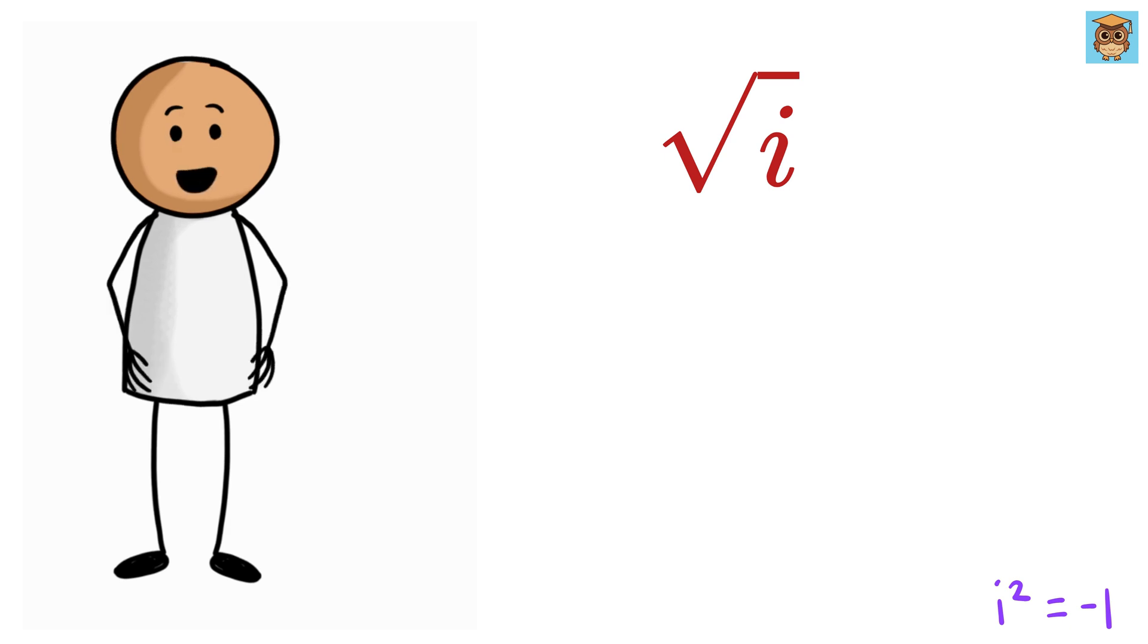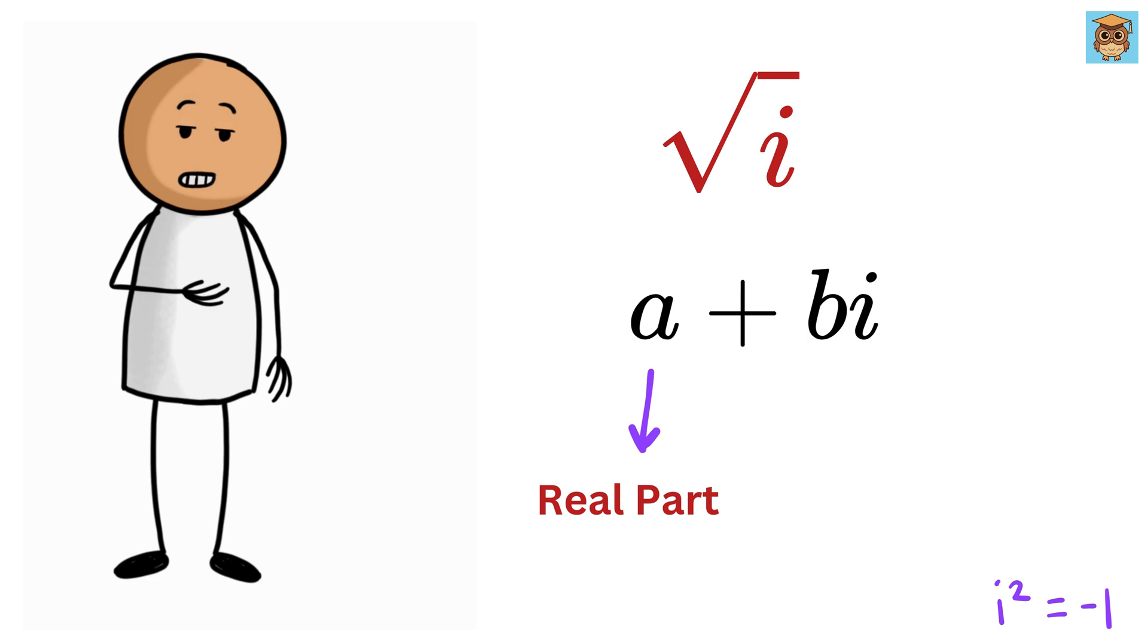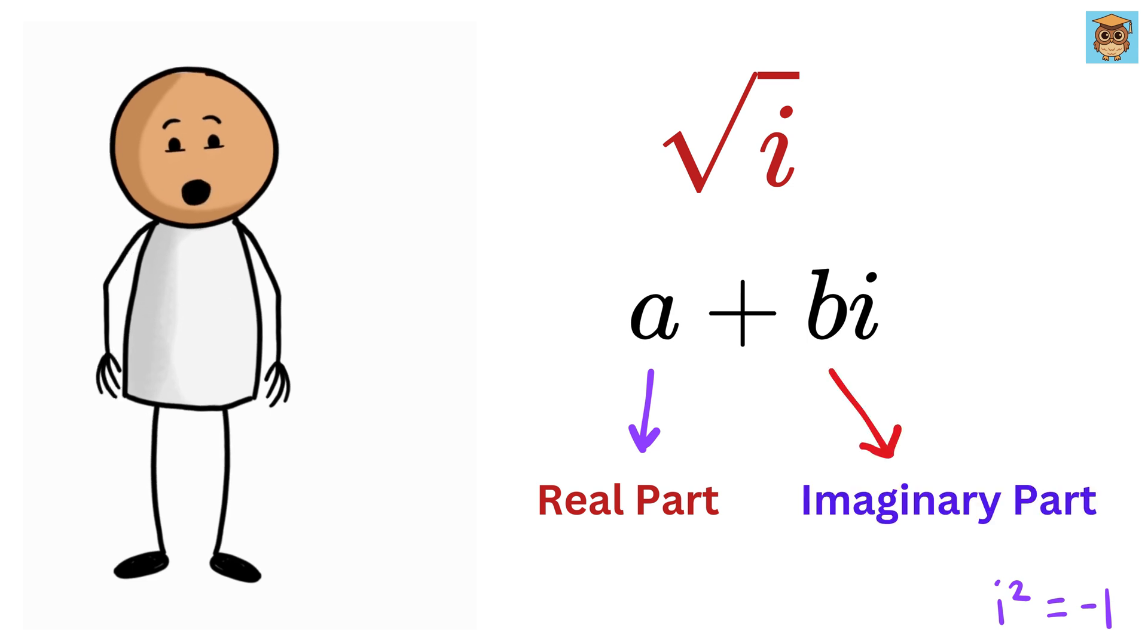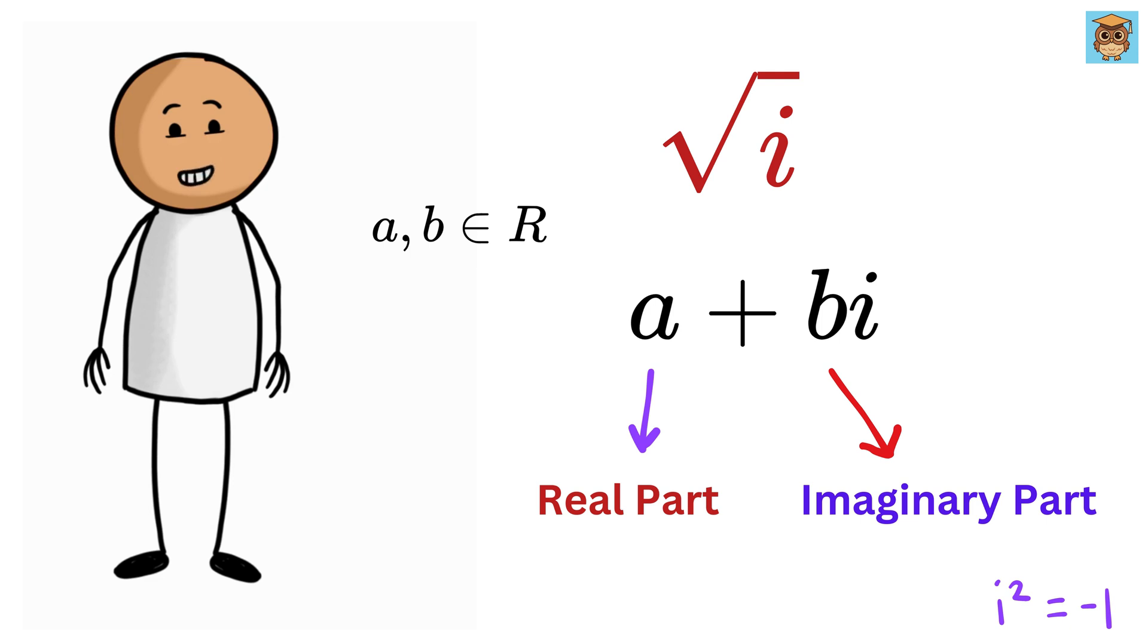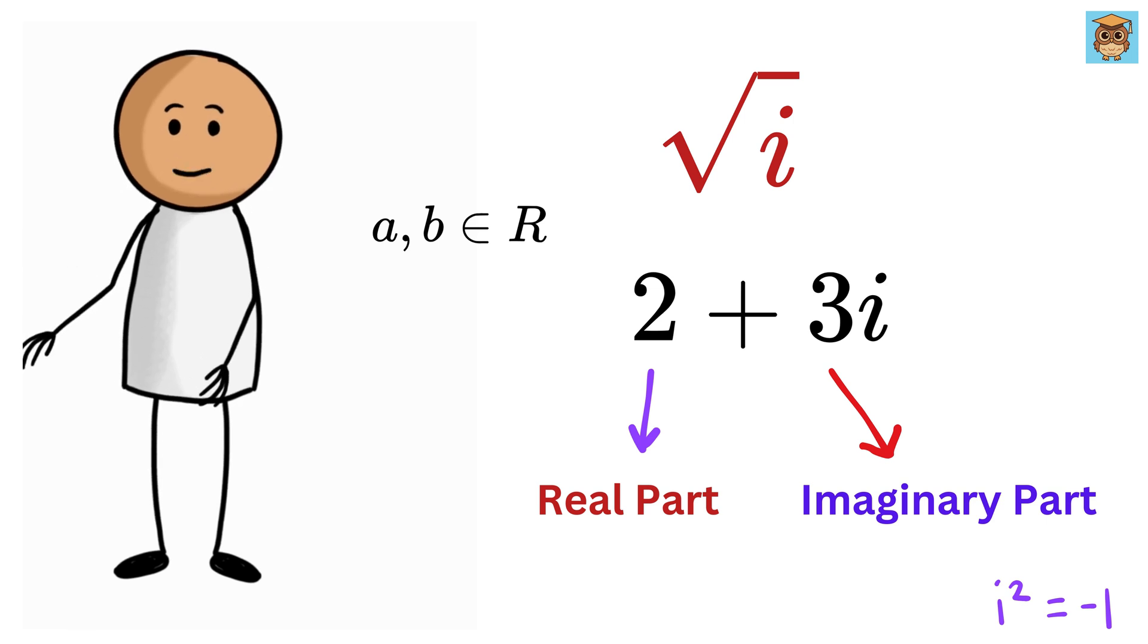A complex number is written as a + bi, where a is called the real part, and b is called the imaginary part, where both a and b are real numbers. For example, 2 + 3i is a complex number with a real part of 2 and an imaginary part of 3.